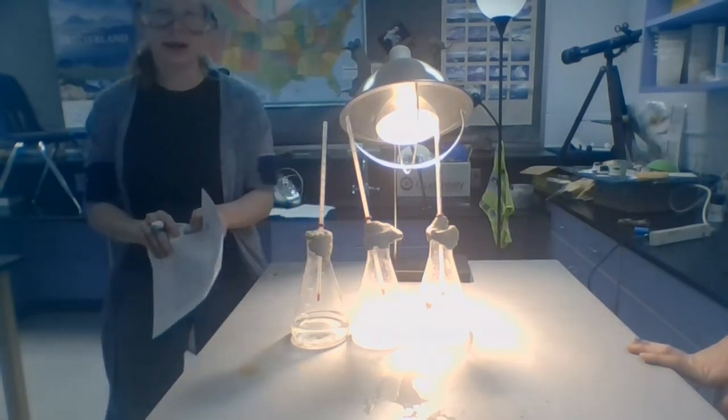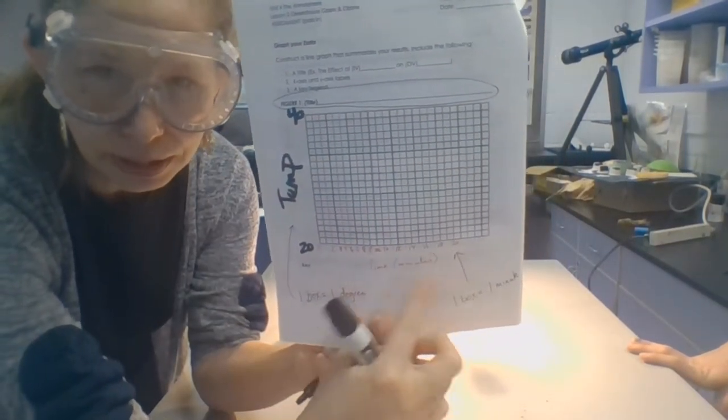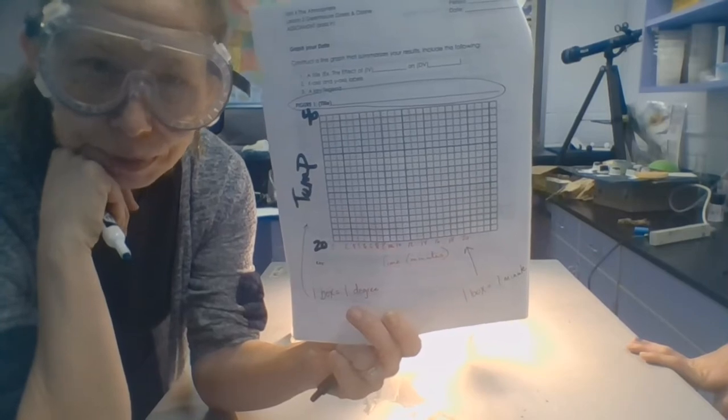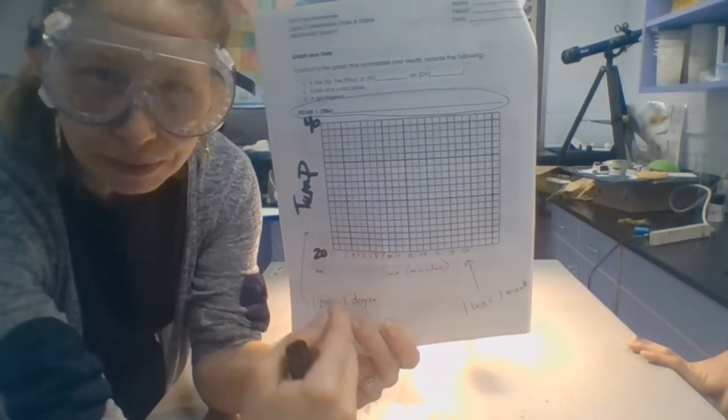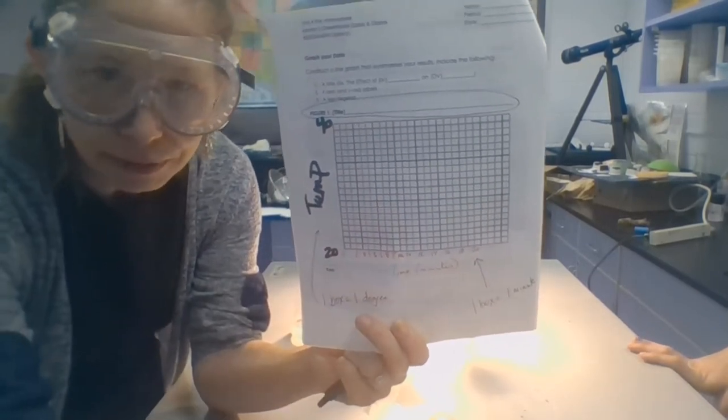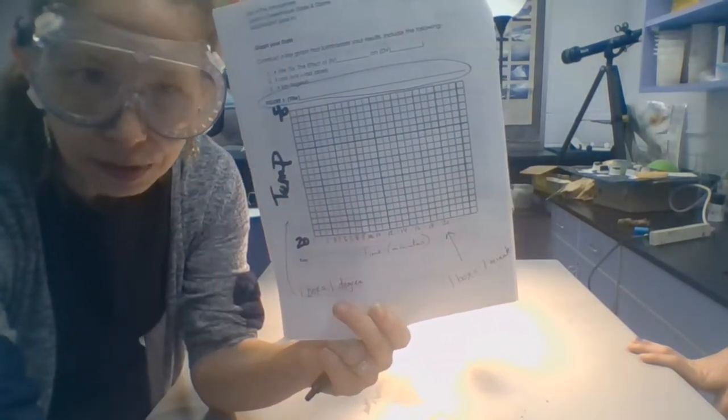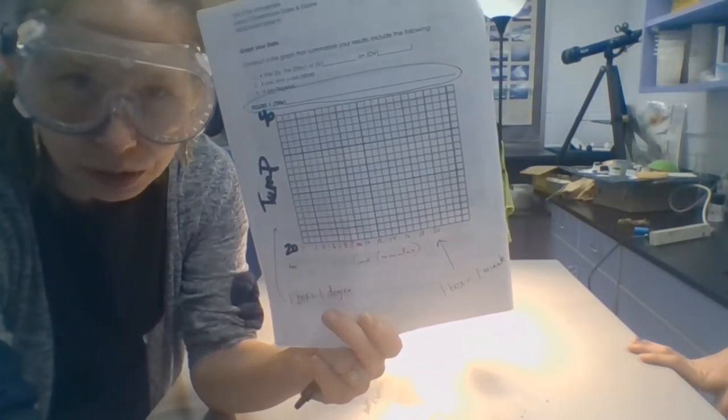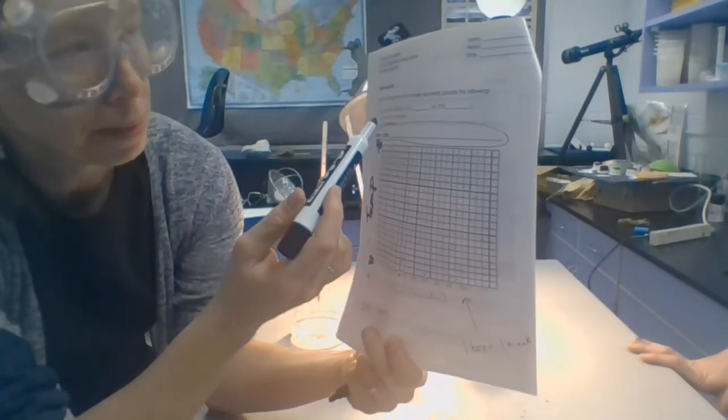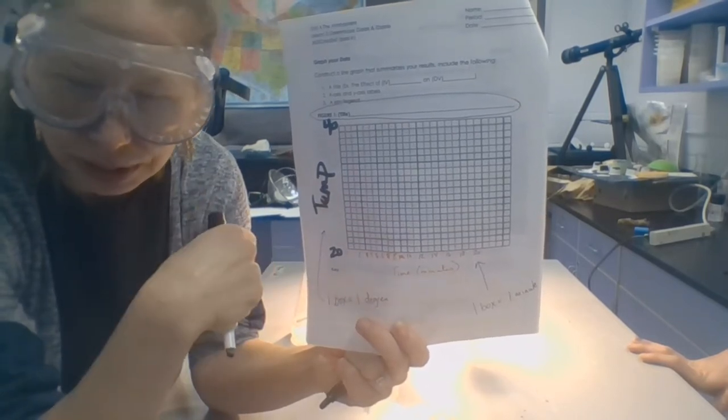All right, so now you have everything that you need to make your graph. On your graph, you want to put time in minutes on the x-axis on the bottom. And then on the y-axis, y to the sky, you want to put temperature in Celsius. In terms of interval, you can do one box is equal to one minute on the bottom. But since we did it every two minutes, I just skipped it and labeled it like 0, 2, 4, 6, 8. On the y-axis, you can also do one box is equal to one degree. Don't forget to create a title for your graph in the form of maybe the effect of the IV on the DV. So you can look back to the previous page if you're wondering what the IV is and what the DV is.